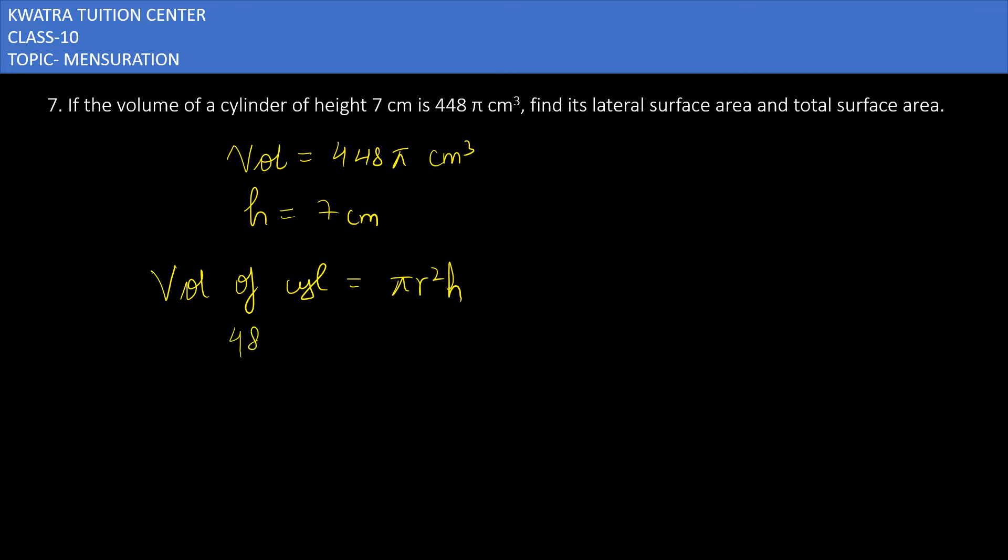Volume of cylinder is equal to 448π cm³ and right side we have πr²h. So we can cancel π with π and we can put the value of h in it which is 7. Then it will be 448 over 7 is equal to r².